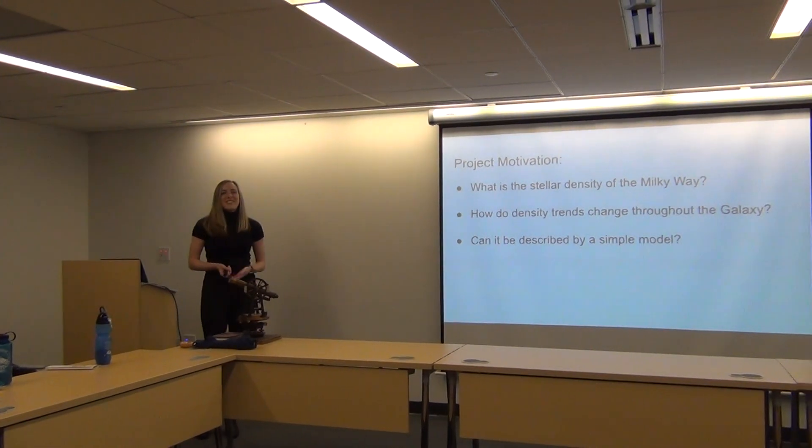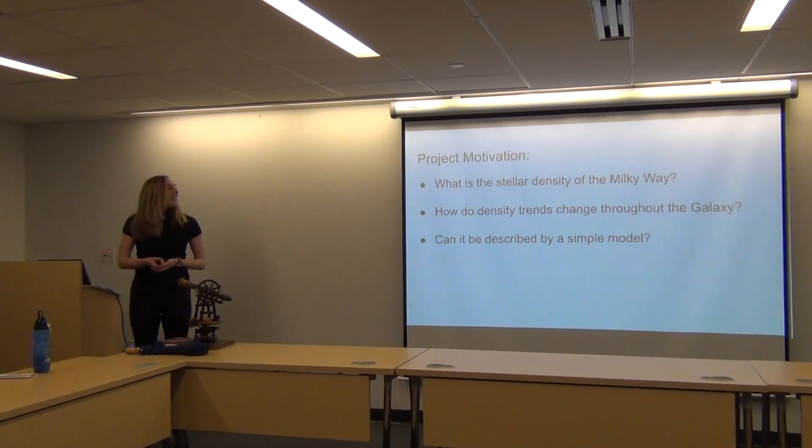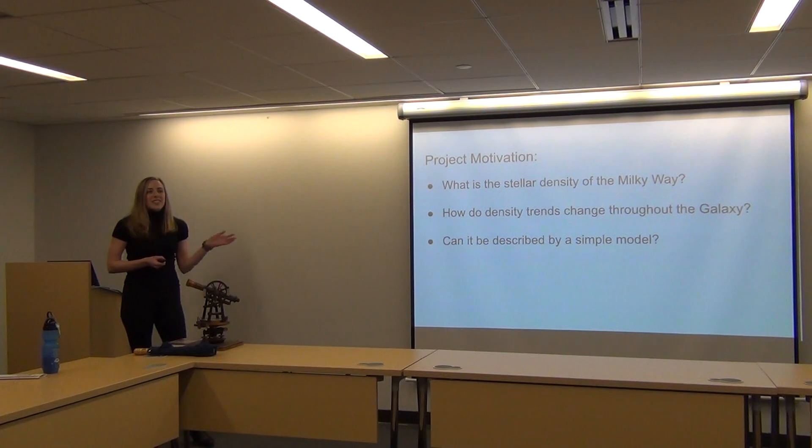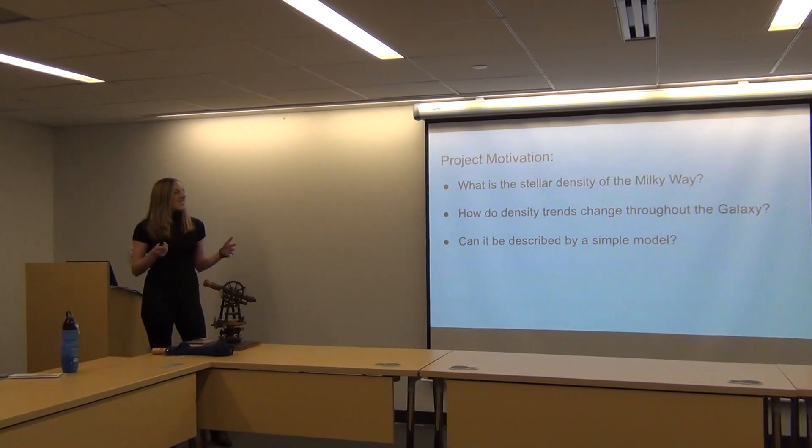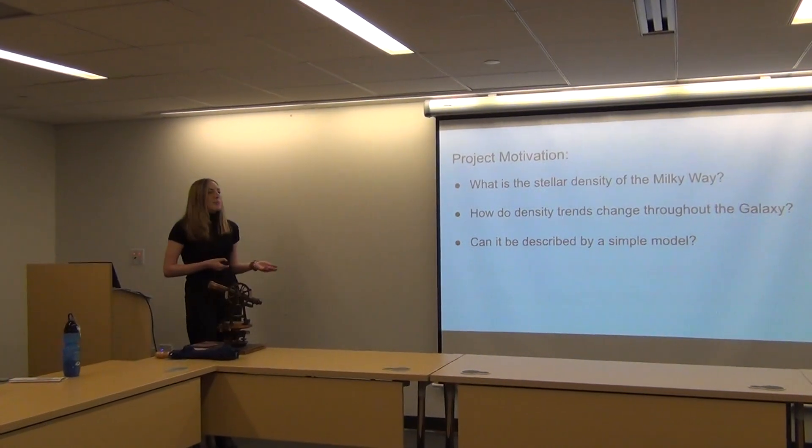A little motivation for the project: what is the stellar density of the Milky Way? How do these density trends change throughout the galaxy when we look at different angles or different distances, and can this be described by a simple model?